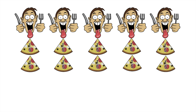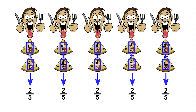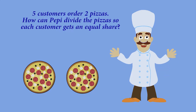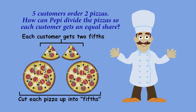Now each customer gets one fifth of the first pizza and one fifth of the second pizza, or a total of two fifths. So I cut each pizza up into fifths and give each customer two fifths. Thank you so much for helping Peppy!